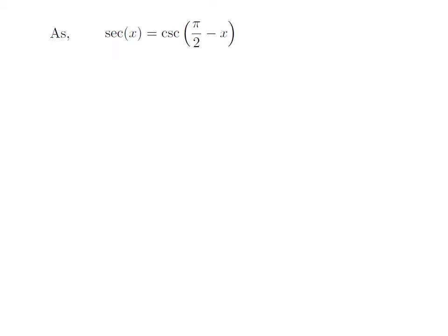As we all know, the secant of x is equal to cosecant of pi by 2 minus x. So arccosecant of secant of x is equal to arccosecant of cosecant of pi by 2 minus x.